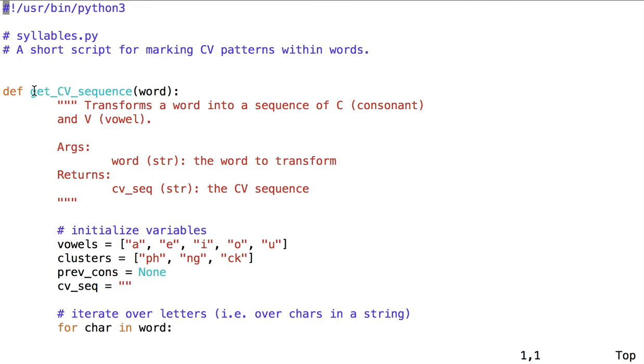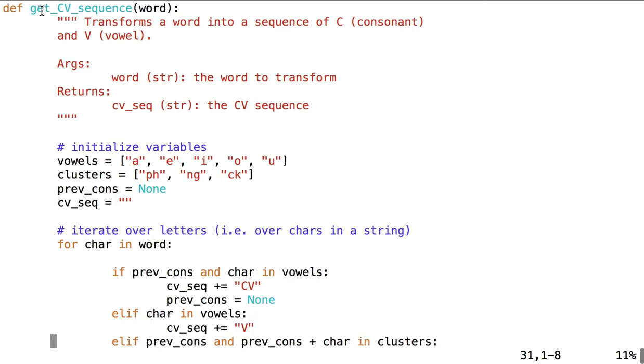So once again, get CV sequence will take as its argument a word, this is the word to transform, and it returns cv_seq, which is a string, just like word, but this string is the sequence of consonants and vowels in that word. In order to do the work in get CV sequence, we initialize some variables. First we define what the vowels are in a Python list, as you can see by the square brackets, and the values separated by commas. This particular list happens to be a list with all string values, A, E, I, O, and U. These are our vowels.